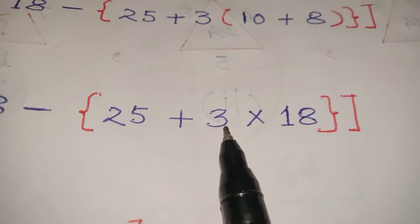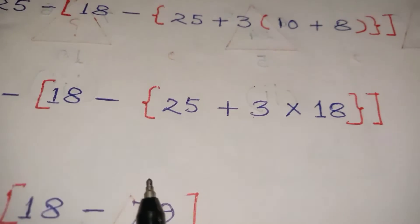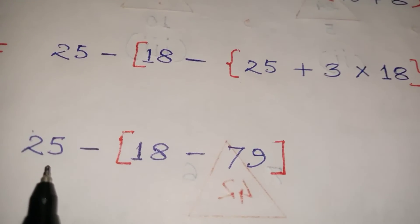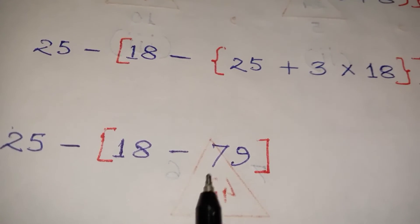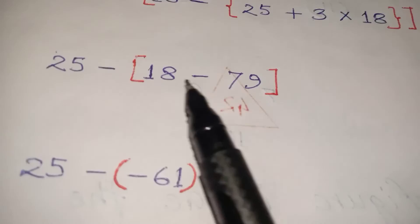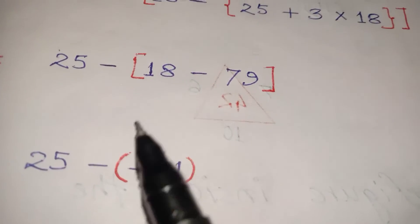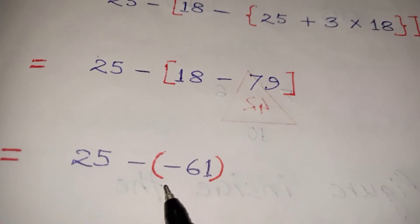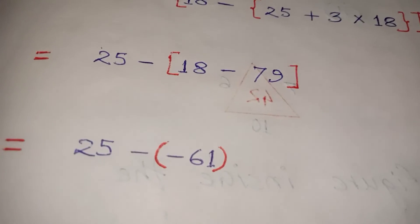You are now getting 54. 54 will become 61. 25 minus 61, which is minus 61. So this is minus 61.